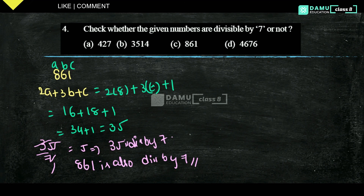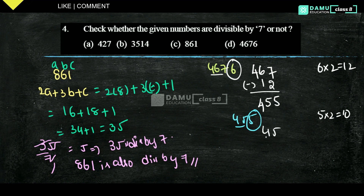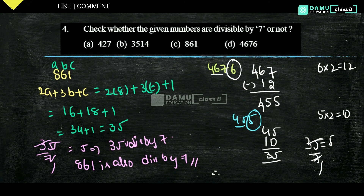Our last one is 4676. Take the left 3 digits: 467, and the unit digit is 6. Multiply 6 by 2 to get 12. Subtract: 72 minus 1 gives 5, bring down 4 — we get 455. From 455, take left 2 digits (45) and unit digit 5; multiply 5 by 2 to get 10. Then 45 minus 10 equals 35. Is 35 divisible by 7? Yes — 7 fives are 35. Therefore, 4676 is divisible by 7. For a 3-digit number use the formula 2A+3B+C; for a 4-digit number use the step-by-step subtraction method.